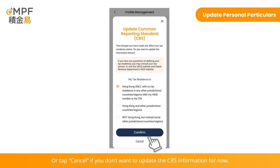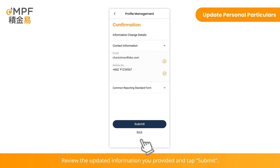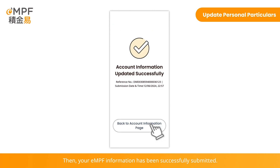Or tap Cancel if you don't want to update the CRS information for now. Review the updated information you provided and tap Submit. Read the terms and conditions and tap Accept. Then your EMPF information has been successfully submitted.